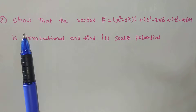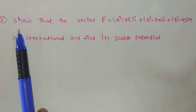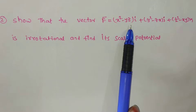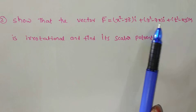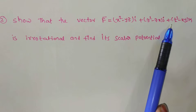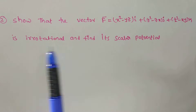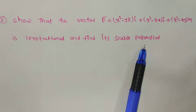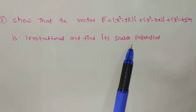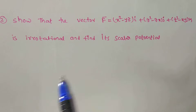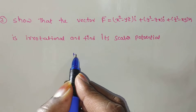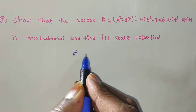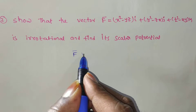The given problem is: show that the vector f̄ = (x² − yz)i + (y² − zx)j + (z² − xy)k is irrotational, and find its scalar potential function. If the given vector point function f̄ is an irrotational vector,